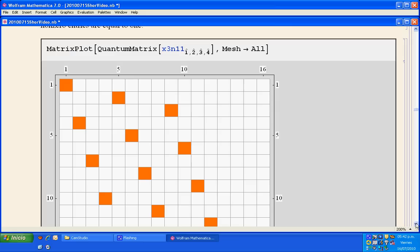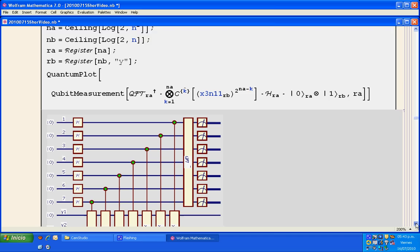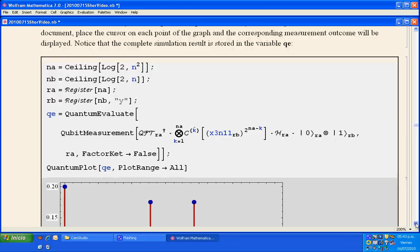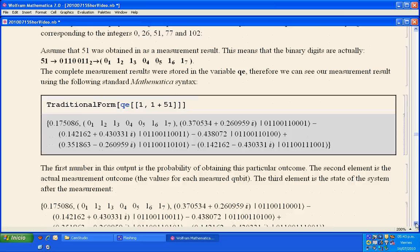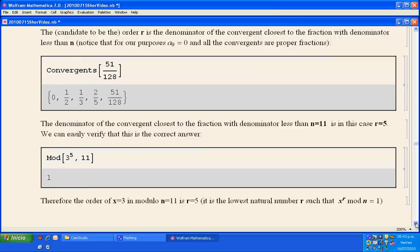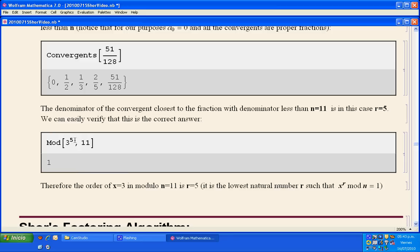Here we have the circuit and the simulation of the circuit. Depending on the output that you get, you do some post-processing, and from that post-processing, which involves convergence, you can obtain the order. In this case of x equal to 3 modulo 11, the order is 5 that was obtained from the circuit, as you can see when you see this document in the links that I show above or below.